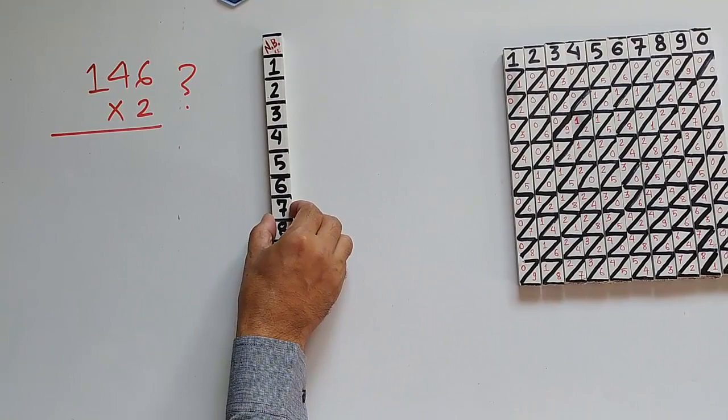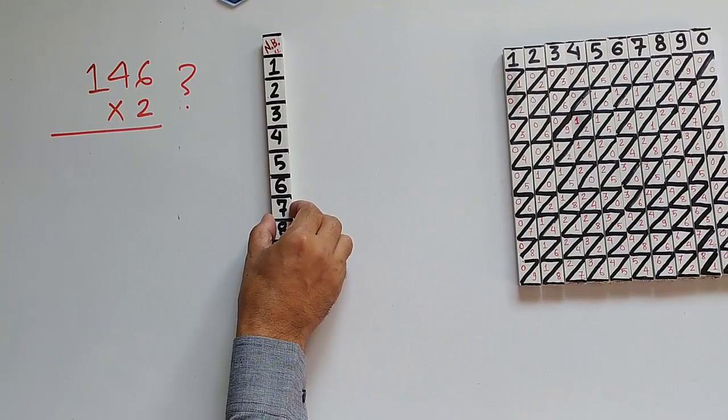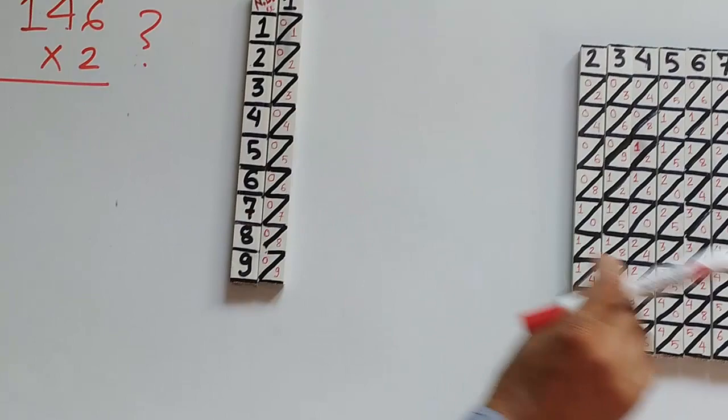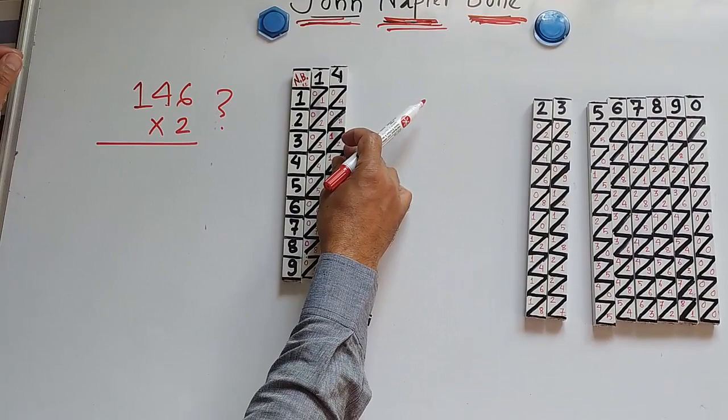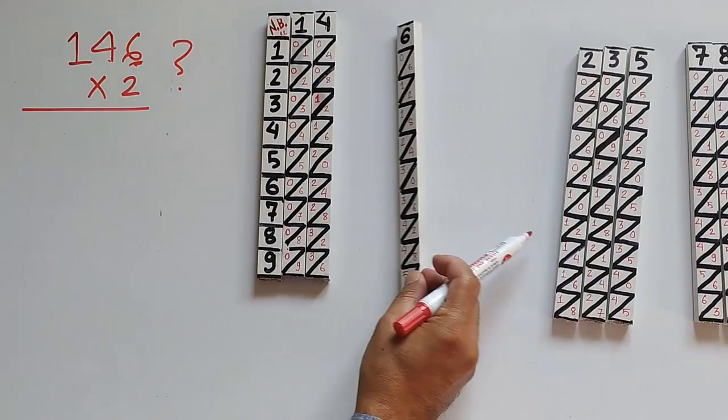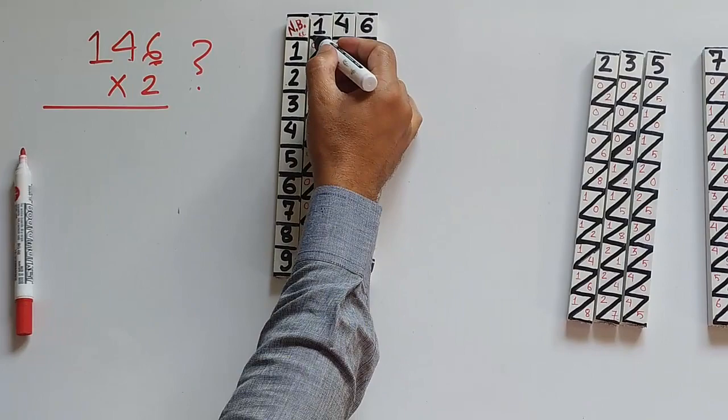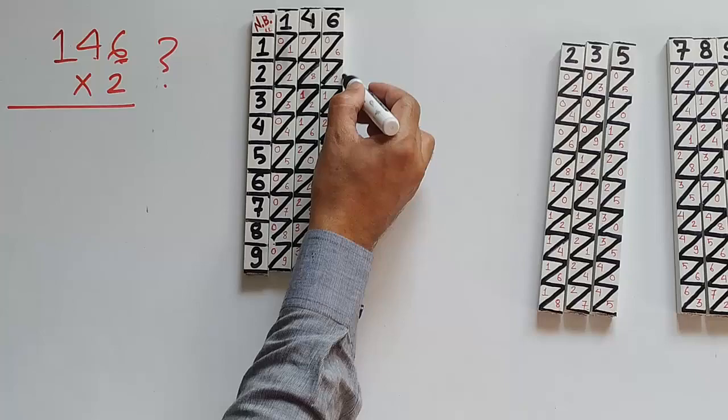So we take the columns 1, 4, and 6. We have taken the columns 1, 4, and 6 multiplied by 2 which is the 2's row.